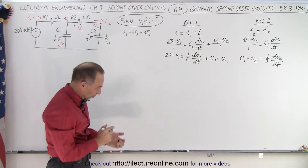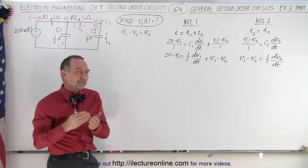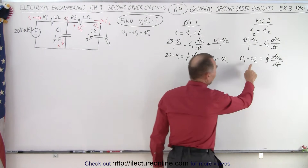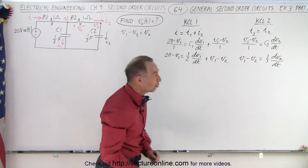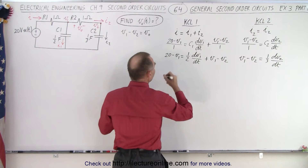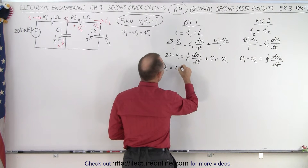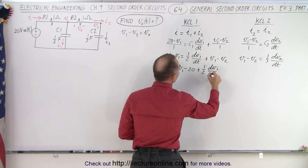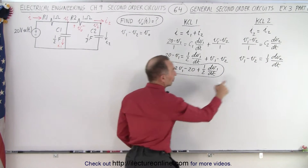Now we need a strategy. The strategy is to get two equations — first V1 with respect to time, then V2 with respect to time — and subtract the two from one another. Looking at the first equation, I have V2 and dV2/dt. If I can substitute for these in terms of V1, I have an equation with just V1. Using the second equation, solving for V2: V2 equals 2V1 minus 20 plus one-half dV1/dt. This gives V2 in terms of V1, which can be substituted in.